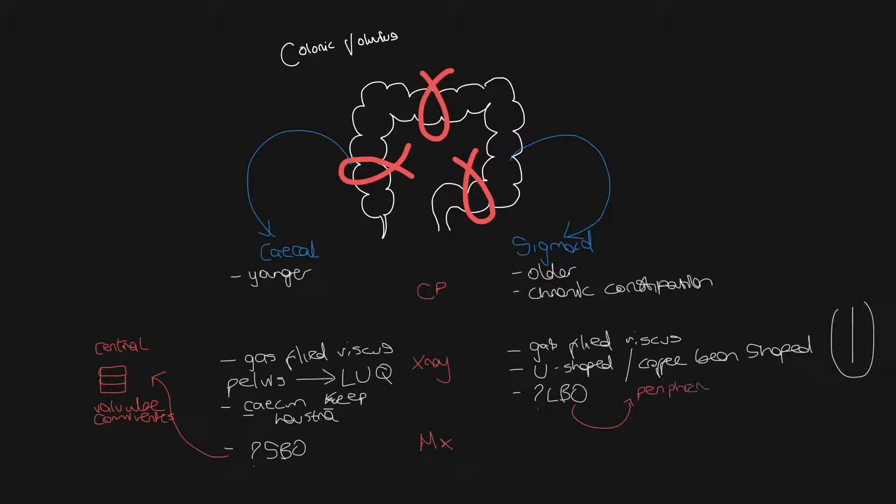And just as a recap, these will be peripherally placed dilated loops. They have haustra, which look different to valvulae conventes because they don't go the whole circumference around the bowel. And the pelvic overlay sign is when the dilated sigmoid overlays dilated large bowel.